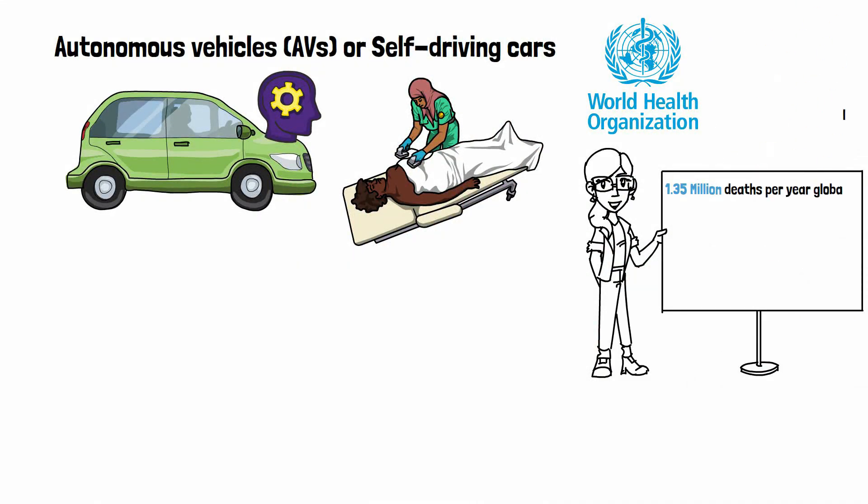Approximately 1.35 million people die each year as a result of road traffic crashes worldwide. This translates to an average of almost 3,700 deaths per day. Additionally, between 20 and 50 million people are either injured or disabled as a result of road traffic accidents each year.